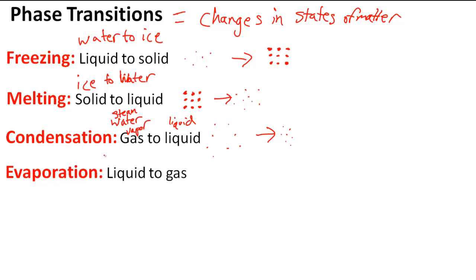Evaporation involves liquid or water going to steam. So instead of the particles getting closer together, it's getting hotter. If you boil water, you'll see steam coming from it.